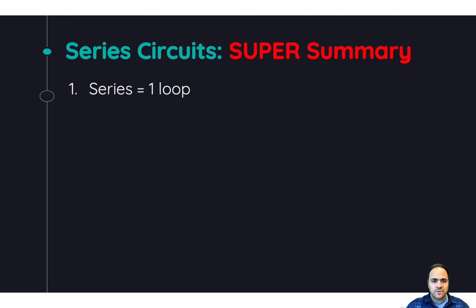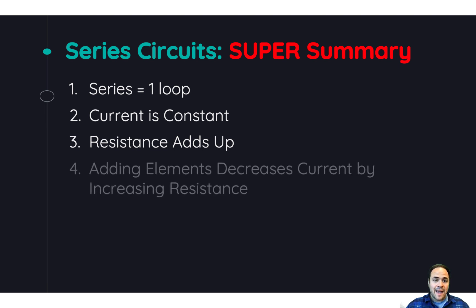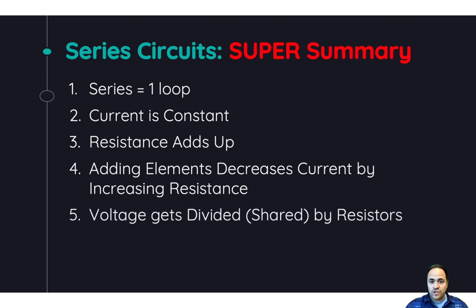Super summary: a series circuit is just one loop — one path for charge to flow. Anywhere in that path, current is always the same no matter where you check. Resistance for the entire circuit is just the sum of all resistors. When you add more elements, you increase resistance and naturally decrease current. Voltage gets divided and shared by all resistors. And if one of those resistors dies, the entire circuit dies.